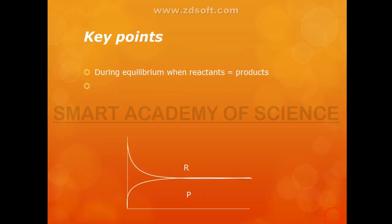Key point: chemical equilibrium means the rate of the forward reaction is equal to the rate of the reverse reaction — reactant concentration and product concentration are equal.